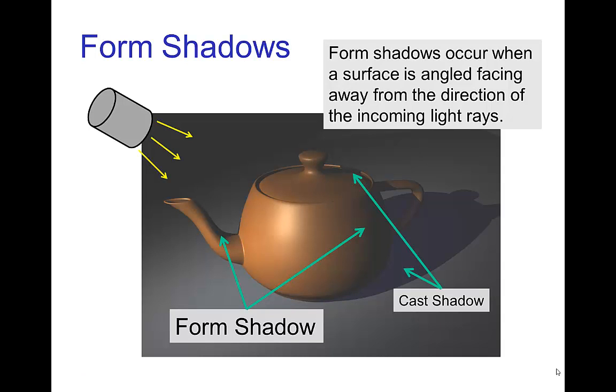So now we're going to look at form shadows. An example here on the spout of the teapot and on the surface of the teapot behind it. These shadows form when a surface is angled facing away from the light source.